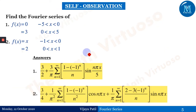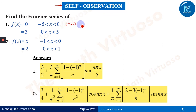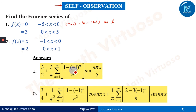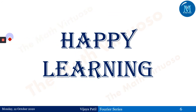This is the self-observation slide with two questions: one with interval minus 5 to 5 and one with interval minus 1 to 1. Compare the interval minus 5 to 5 with c to c plus 2l to get the value of l, then proceed with the question. The answers are provided so you can verify your results. This concludes the topic of Fourier series for the interval minus l to l. Thank you, happy learning.